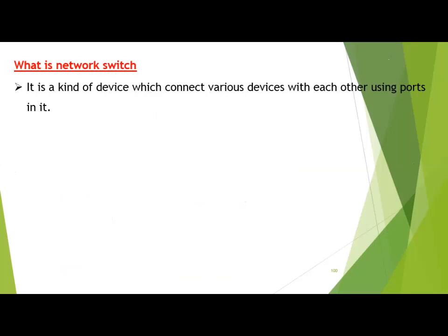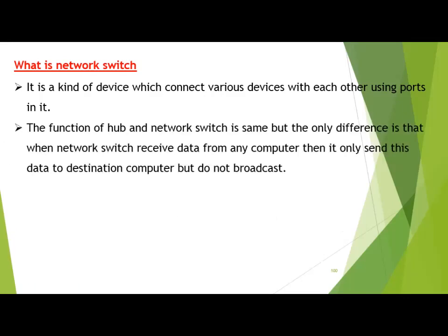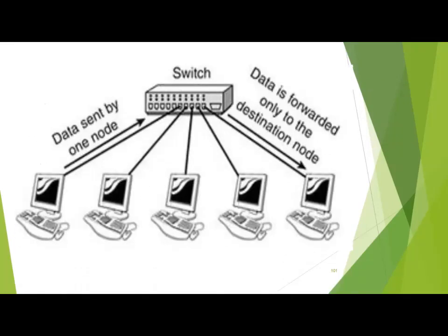What is a network switch? It is a device which connects various devices with each other using ports. The basic function of hub and switch is the same, but the difference is that a switch is more intelligent than a hub. When a network switch receives data from any computer, it only sends this data to the destination computer — it does not broadcast. Hub broadcasts the data but a switch unicasts the data, sending only to the relevant computer. Data is forwarded only to the destination, so switch has filtering functions and is faster than a hub.